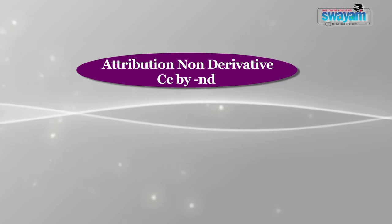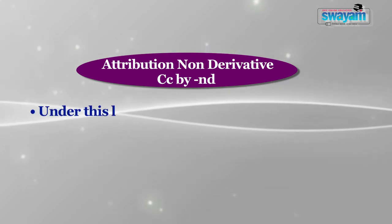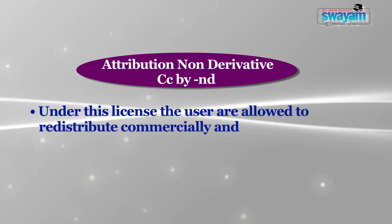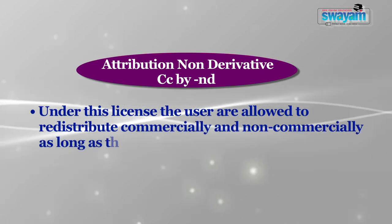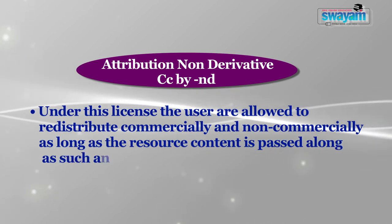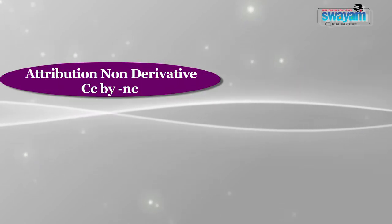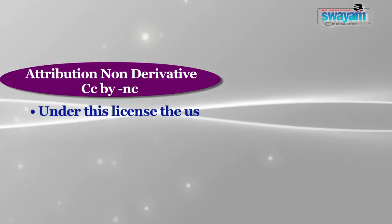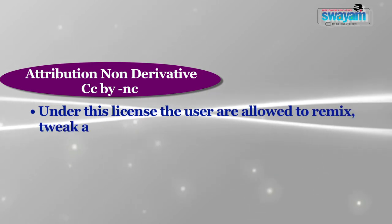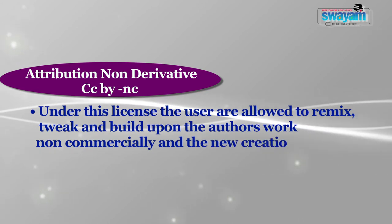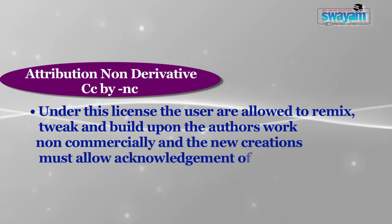Next is Attribution Non-Derivative, denoted CC BY-ND. Under this license, users are allowed to redistribute commercially and non-commercially as long as the resource content is passed along unchanged and with credit to the original author. Next is Attribution Non-Commercial, denoted CC BY-NC. Under this license, users are allowed to remix, tweak, and build upon the author's work non-commercially, and the new creations must include acknowledgment of the original author.